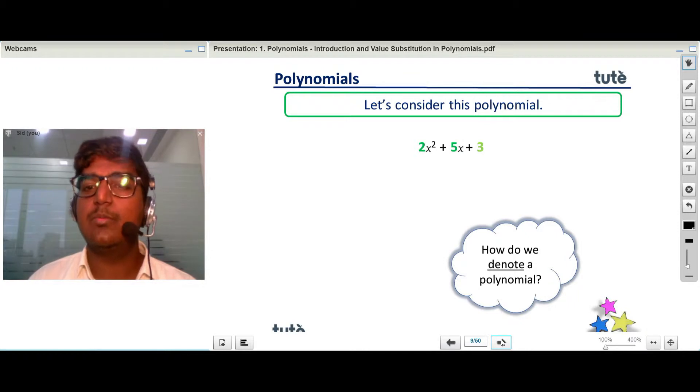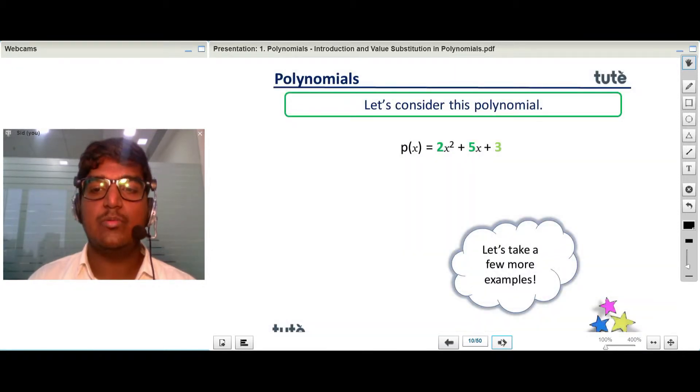So how do we denote a polynomial? We denote a polynomial in the form wherein we write p(x) = 2x² + 5x + 3.